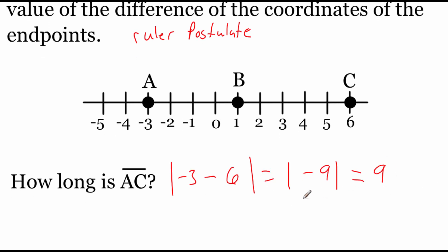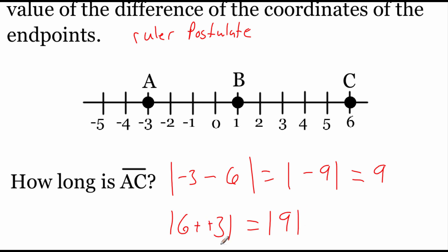Now it doesn't matter what order we do this subtraction in. If we went 6 minus negative 3 instead, we'd end up with the absolute value of 9 because subtracting a negative is just like adding, and then the absolute value of 9 is just 9. So no matter which way we do it — A minus C or C minus A — we still end up with the same answer.